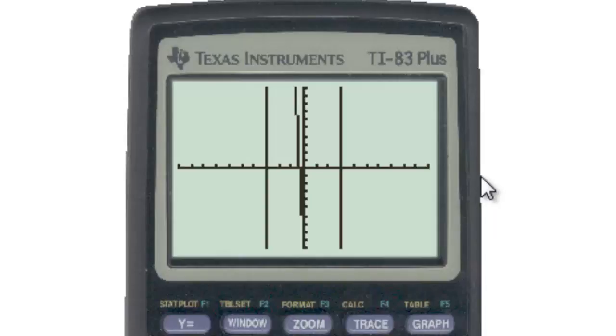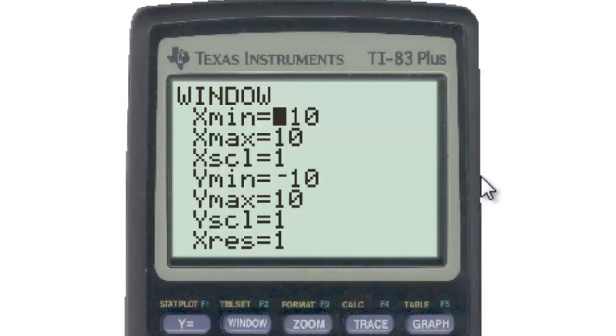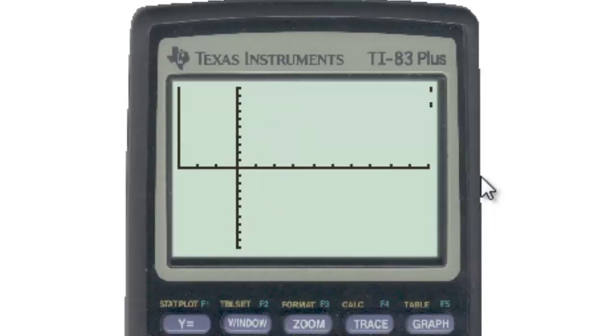So if we zoom in a little bit here, let's make our window on the x's, negative 3, positive 3. We can see that negative 3 and positive 3 look good, and the negative 1/3 looks good.